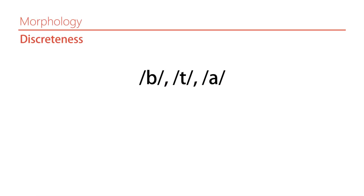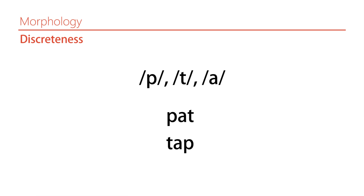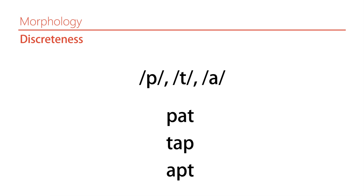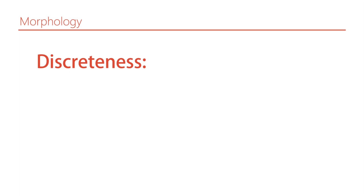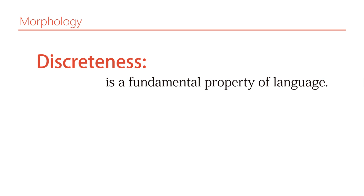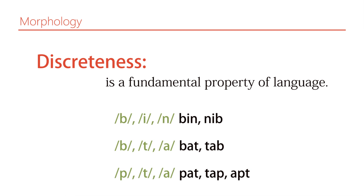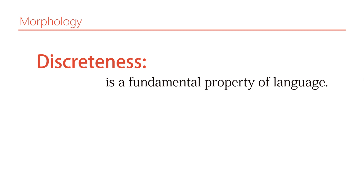To give an example from phonology: 'bat' — if I rearrange the sounds I get 'tab,' a different word. Or 'pat,' 'apt.' Three different possibilities from the same components shows that these are distinct, discrete units. Discreteness — the property of being discrete — is a fundamental property of language that makes it possible to combine all these discrete units in various ways. This applies not just in phonology but also in morphology.